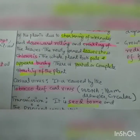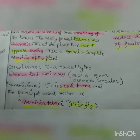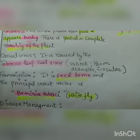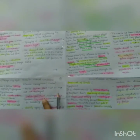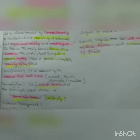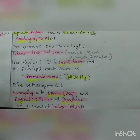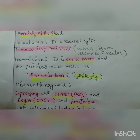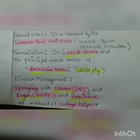The causal virus is the Tobacco leaf curl virus, which is single-stranded DNA, 18 nm in diameter and circular. Among the four diseases covered, two — leaf curl of papaya and leaf curl of tomato — are caused by single-stranded DNA, while the other two — mosaic of papaya and leaf roll of potato — are caused by single-stranded RNA. Make this table. Transmission: the virus is seed-borne and the principal insect vector is Bemisia tabaci, the whitefly.